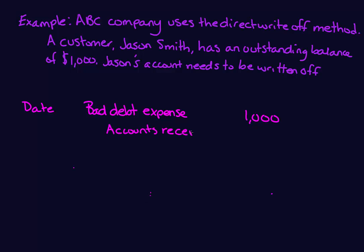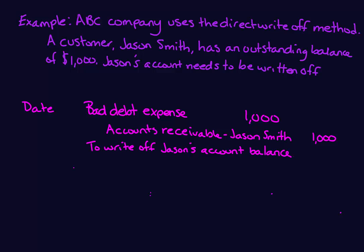So our journal entry would look like this. Our debit would be to bad debt expense for the amount of the write-off — $1,000 — and our credit would be to accounts receivable for $1,000. Note that under this method, we are not using an allowance for doubtful accounts. We're simply writing it off to the income statement as a bad debt expense as we know that the customer is not going to pay us.